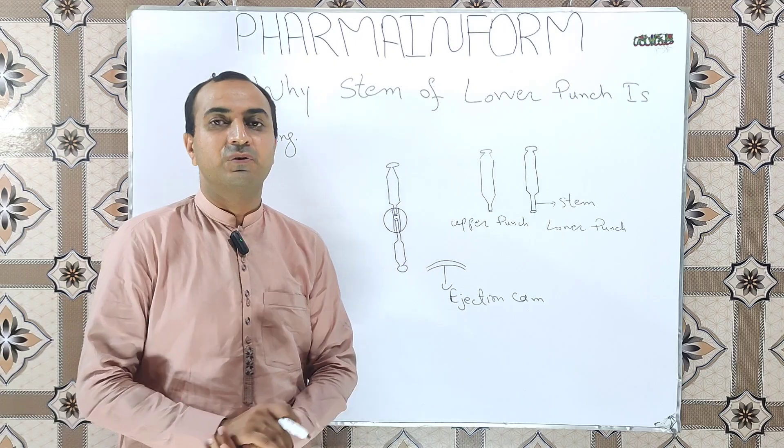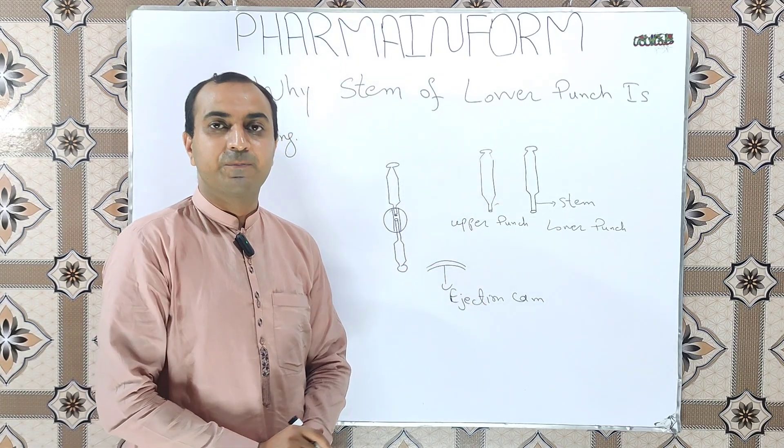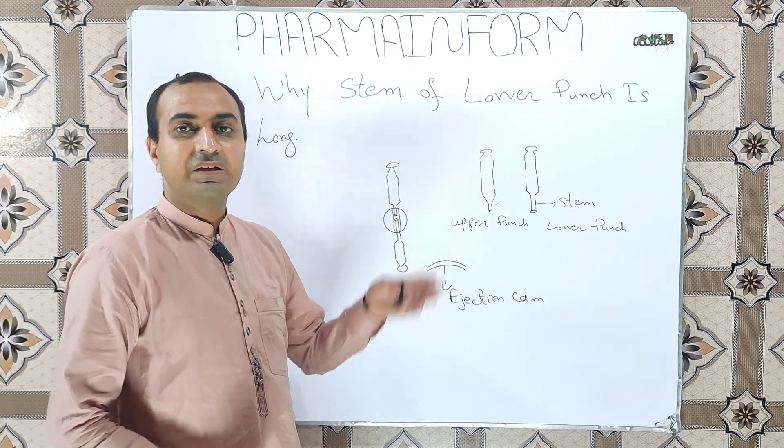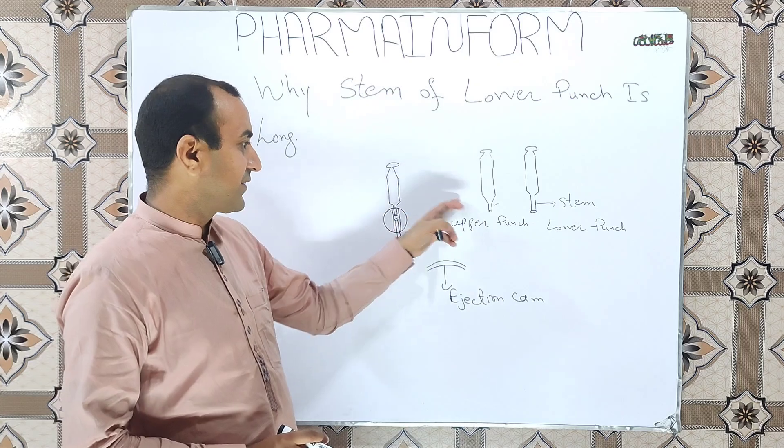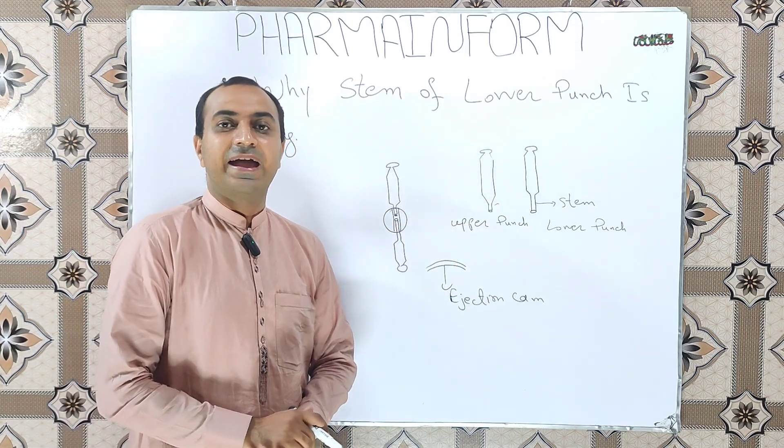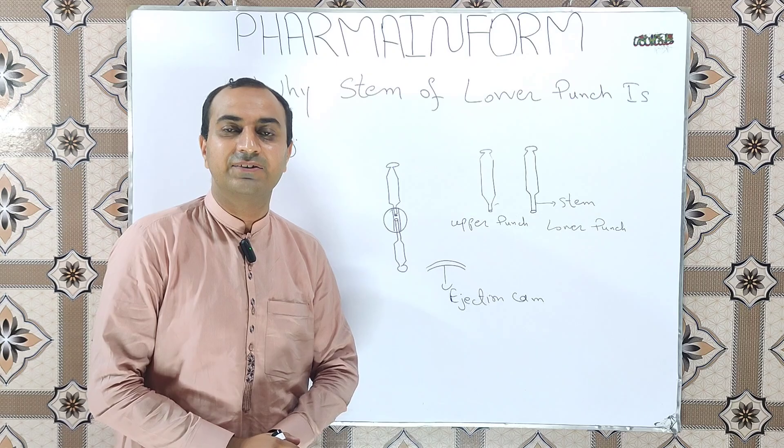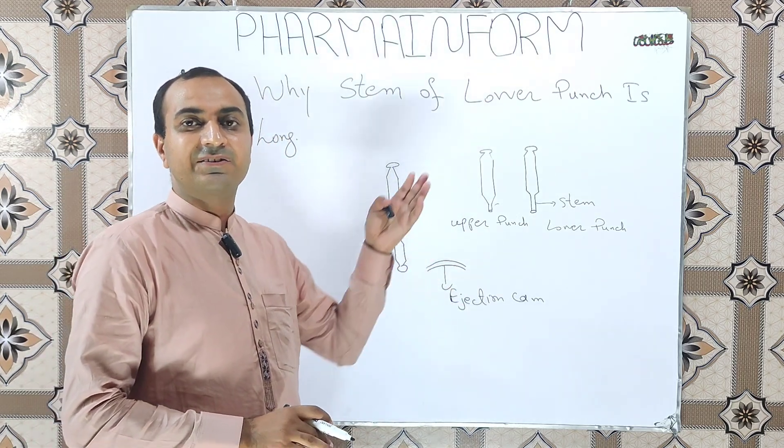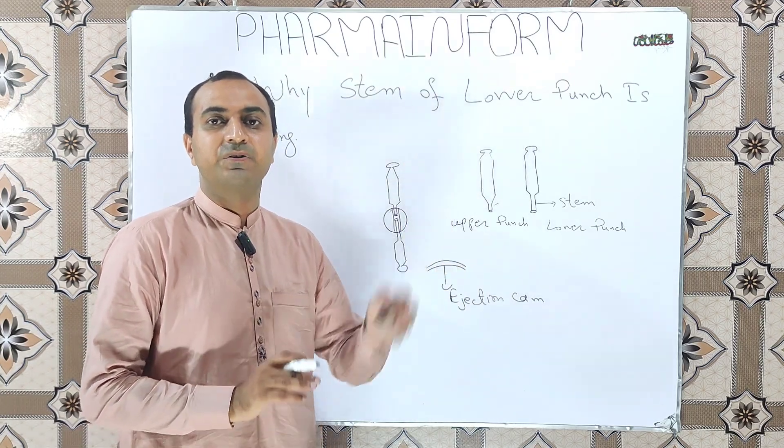This one is the stem of lower punch and this one is the stem of the upper punch. You can easily see from the diagram that the stem of lower punch is longer than the stem of the upper punch, and if you have noticed in the pharmaceutical industries during the installation of the punches on the compression machine, always the stem of lower punch is longer than the upper punch.